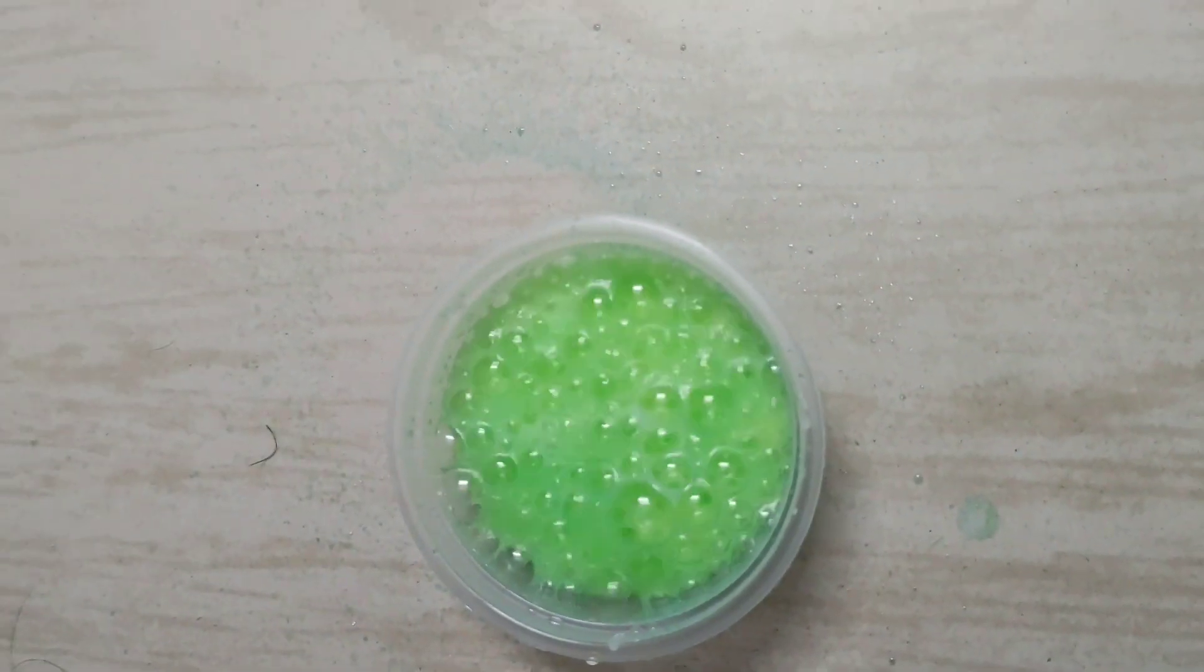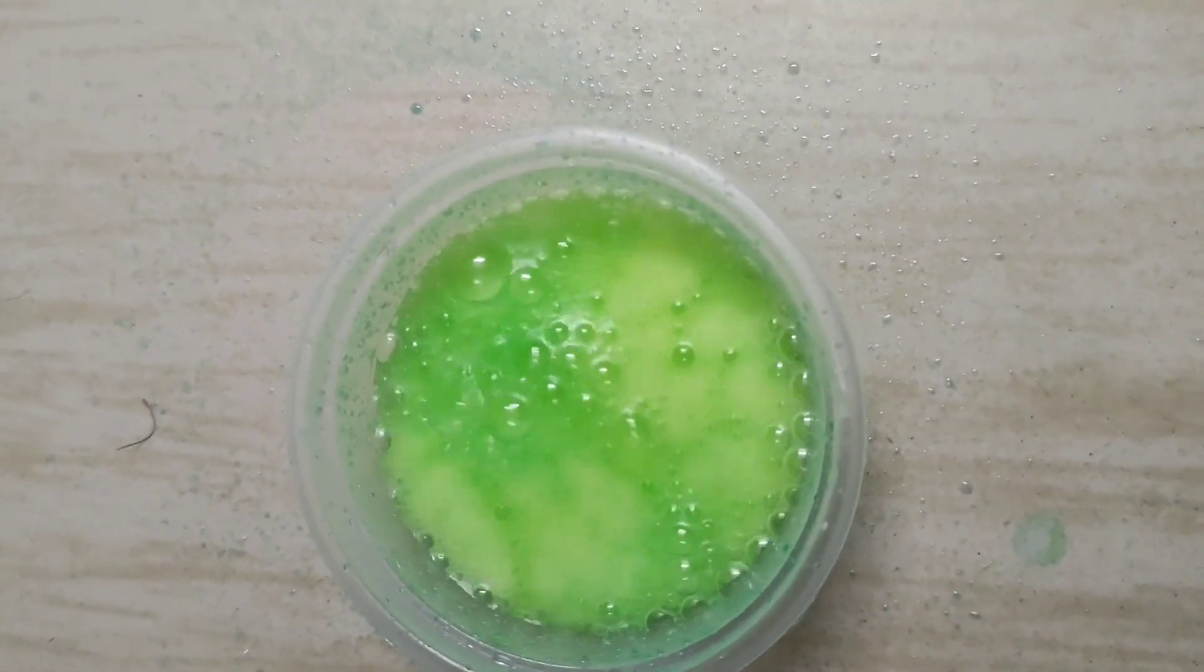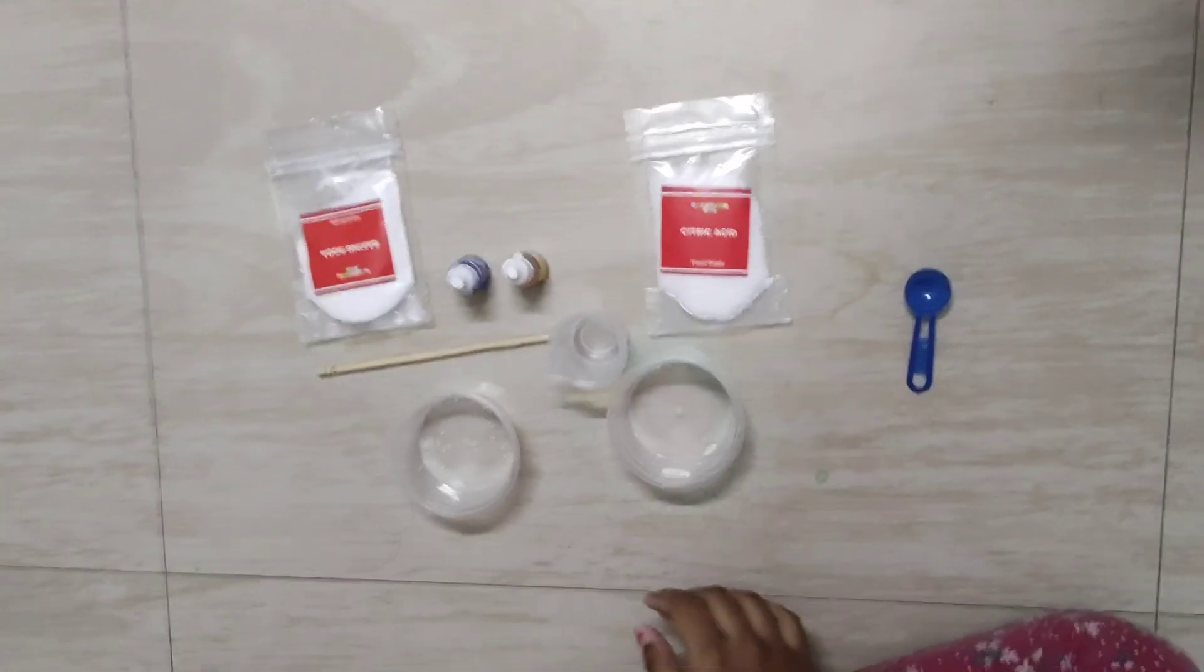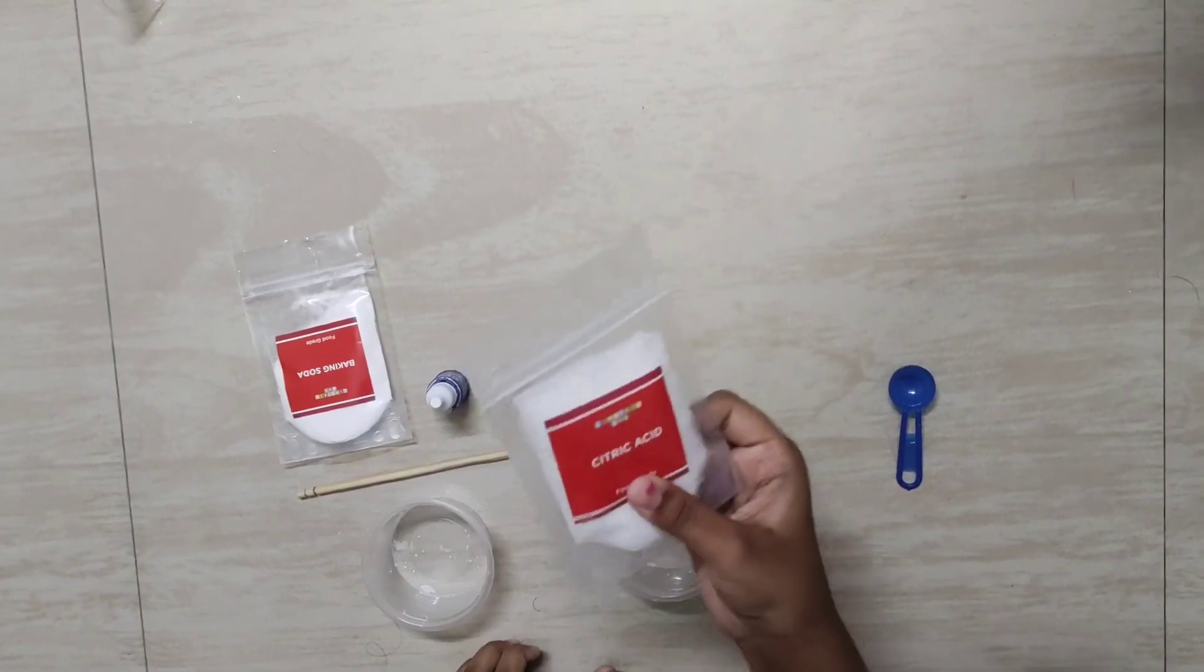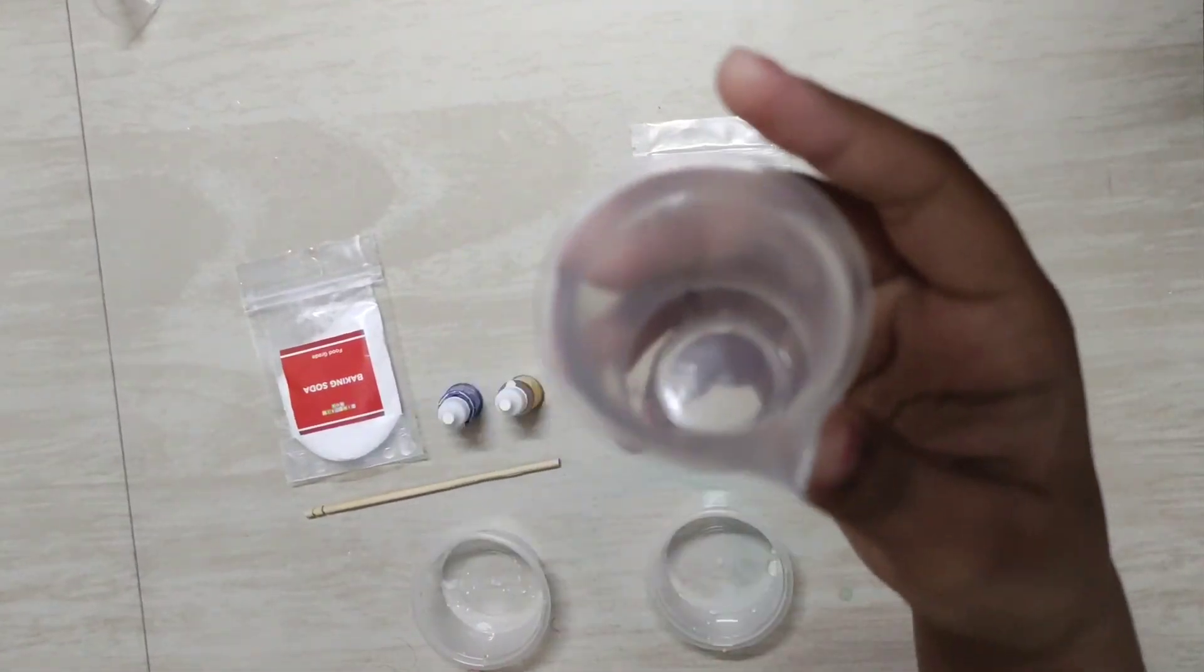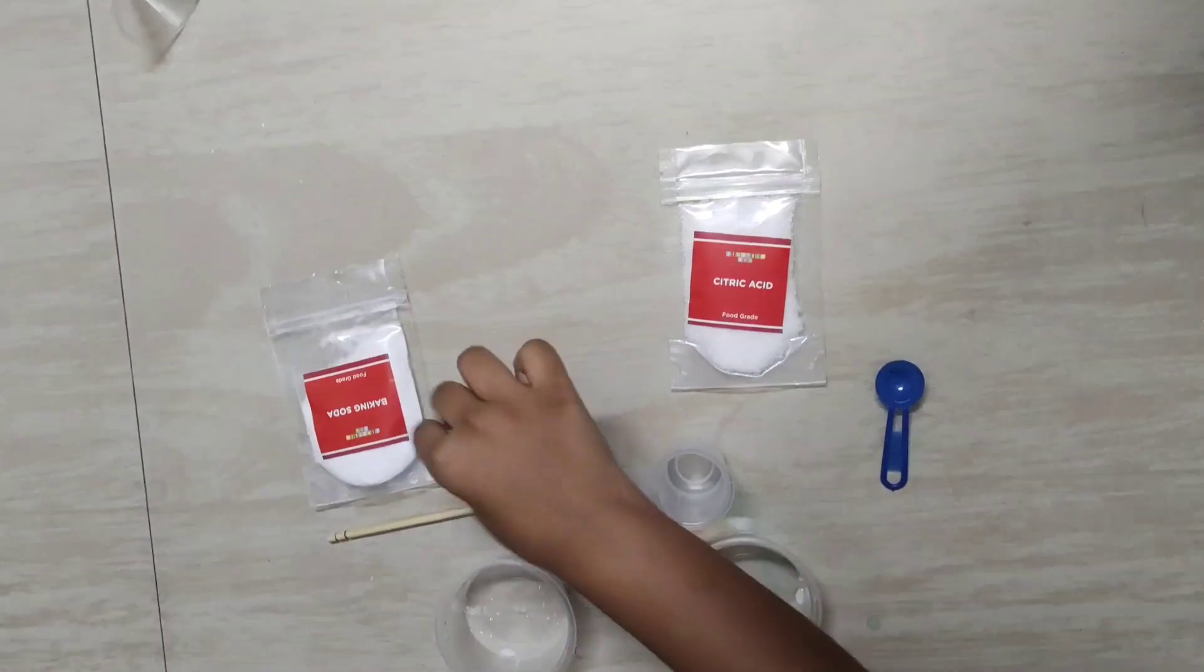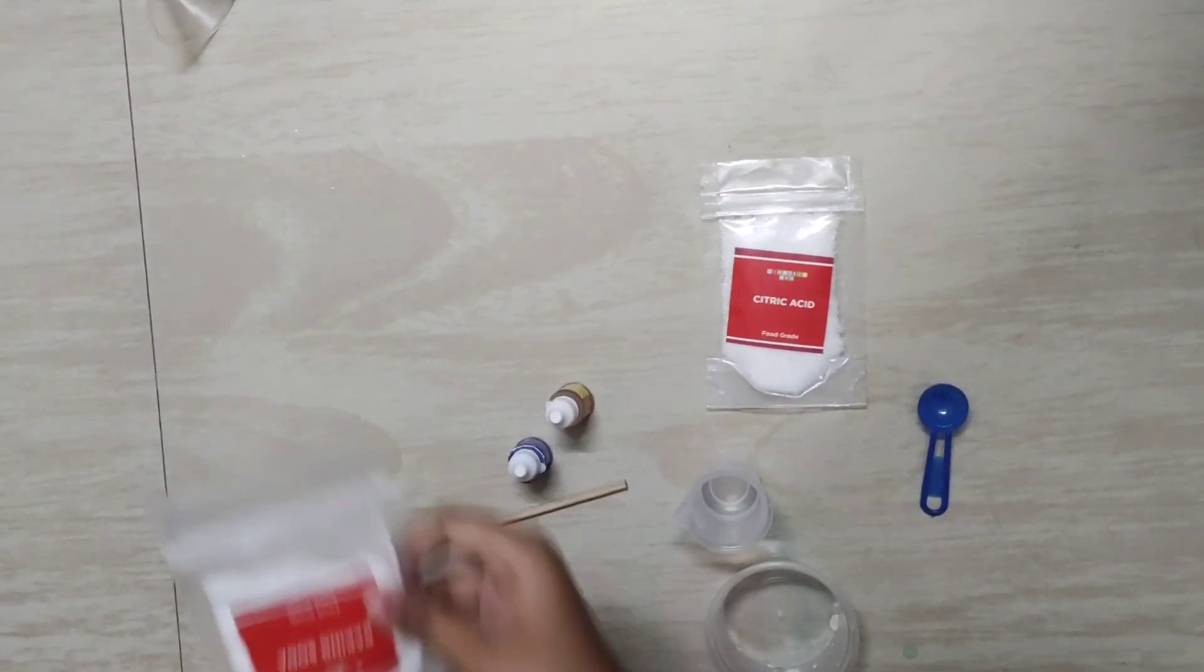Hey guys, welcome back to another video. Today I'll show you how to make a magical fizzy potion. First, you'll need citric acid, a scoop, two cups, a measuring cylinder, yellow color, blue color, a stirring stick, and baking soda.